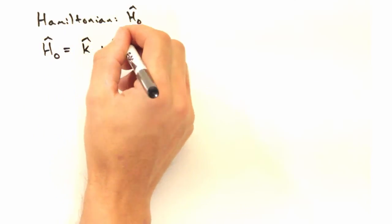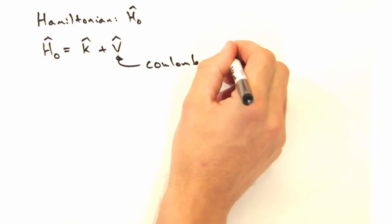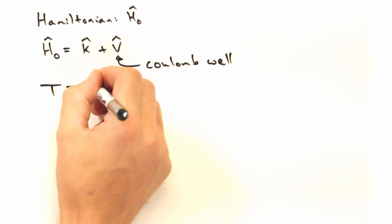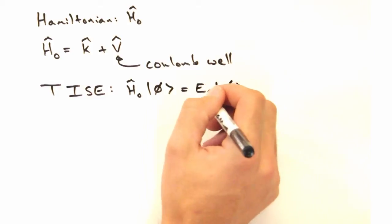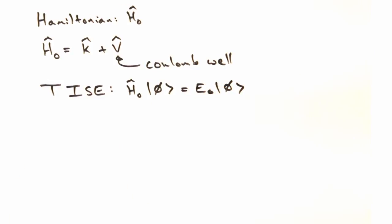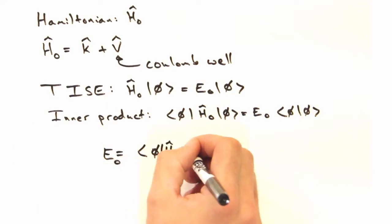This Hamiltonian isn't so bad. We're going to separate it into a kinetic part and a potential part. Is the potential part just the Coulomb well created by the nuclear charge? Yep. Within the time-independent Schrodinger equation, we can solve for the energy of this single atom by taking the inner product with phi. And with a little rearrangement, here we go.